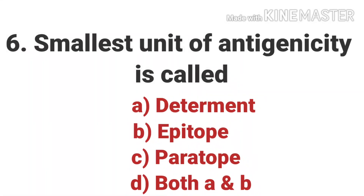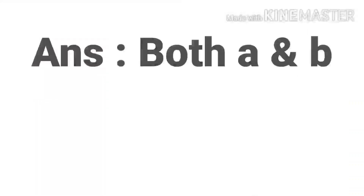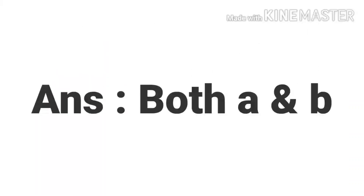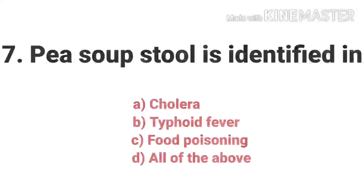The sixth question is: the smallest unit of antigenicity is called? The options are Determinant, Epitope, Paratope, and both A and B. Antigenicity is the capacity of a chemical structure to bind specifically with certain products of adaptive immunity, T cell response, or antibodies.